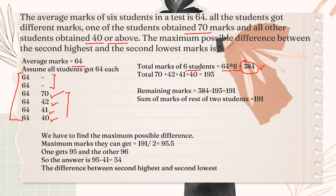Of the students already filled in, 70 plus 42 plus 41 plus 40 gives 193 marks. So the remaining marks for the two students is 384 minus 193, which gives 191 marks. The sum of the marks of these two remaining students is 191. To find the maximum possible difference, we consider the maximum marks: 191 divided by 2 is 95.5, so we average them.